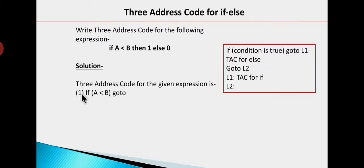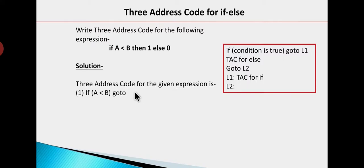The first statement will be: if a less than b. So if condition is true, then we jump — go to n1. We don't know n1 yet, so we leave it. Now for the else portion, we need to write: t1 equals 0. Here t1 is a temporary variable assigned the value zero. This is the else portion.